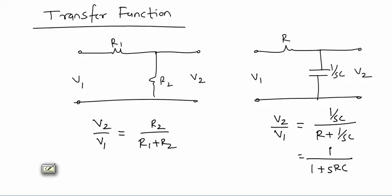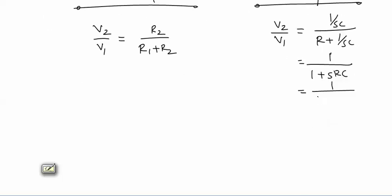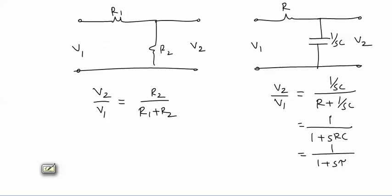So V2 by V1 equals R2 by (R1 + R2) for the resistor divider. For the RC circuit, V2/V1 equals (1/SC) divided by (R + 1/SC), which comes out to be 1/(1 + SRC), or 1/(1 + S·tau), where tau = RC is called the time constant. The resistor circuit has no memory elements, so order is 0. The RC circuit has a capacitor — a memory element — so its order is 1. The order is equal to the number of storage elements in the network.